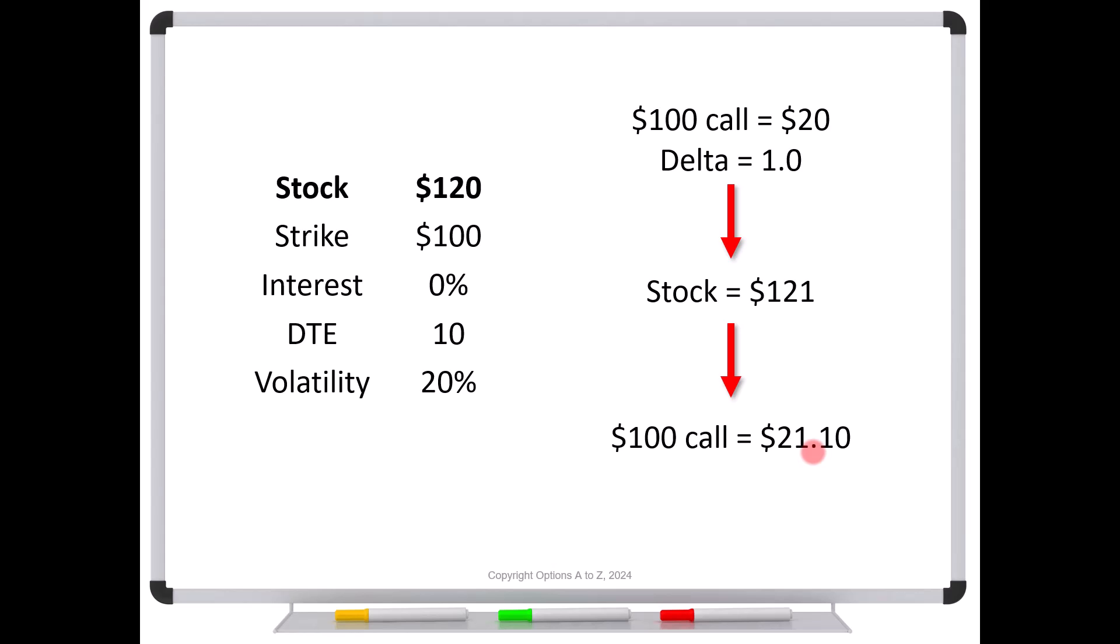Now granted, this is also going to be a very rare case. Because in order to have a delta of one, you either need to be very, very deep in the money, if you've got a lot of time until expiration, or you need to be somewhat in the money if you don't have a lot of time until expiration. And so in both of those cases, the options are not going to be very sensitive to volatility, because they're behaving more like shares of stock. And shares of stock do not have a sensitivity to volatility like an option does. So in this case, to push the option from 21 to $21.10 would require that the volatility spiked from 20% to 60%.